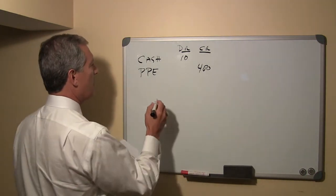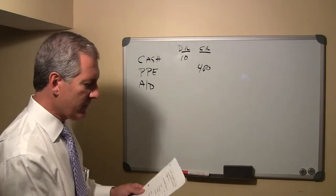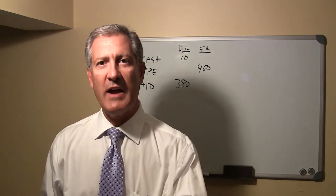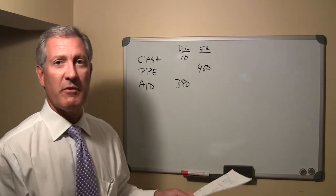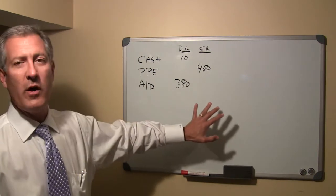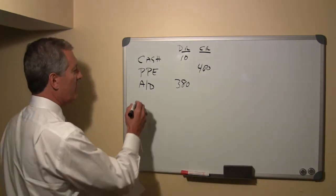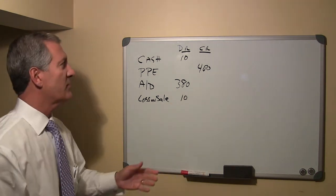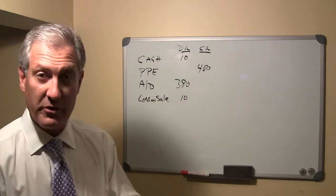The third step is to remove the accumulated depreciation associated with that equipment, which was $380. We debit accumulated depreciation for $380 — recall that accumulated depreciation is a contra asset. Now debits must equal credits: we have $390 in debits but $400 in credits, so we need a debit of $10, which represents the loss on sale of the equipment. That gives us debits totaling $400 and credits of $400 — balanced.